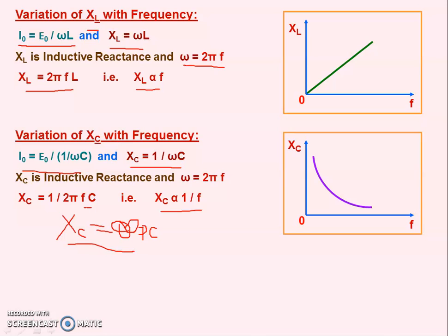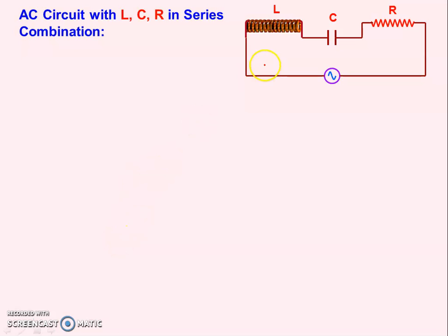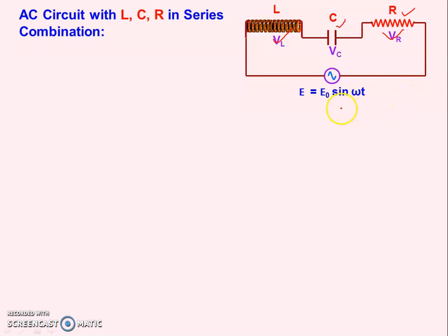Now let us move to our main topic: AC in LCR series circuit. There are three components: L (inductor) with inductance L, C (capacitor) with capacitance C, and R (resistor) with resistance R - all connected in series. When current passes through this circuit, the same current flows through inductor, capacitor, and resistor. We apply EMF E = E₀ sin(ωt), and potential differences appear: VL across inductor, VC across capacitor, and VR across resistor.